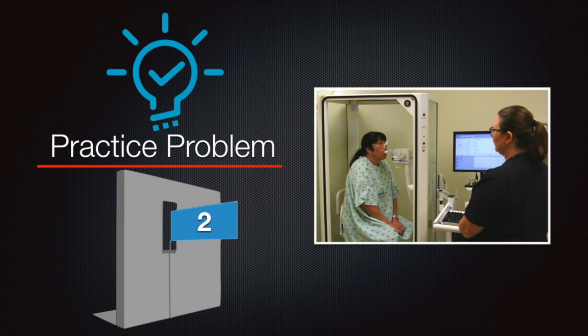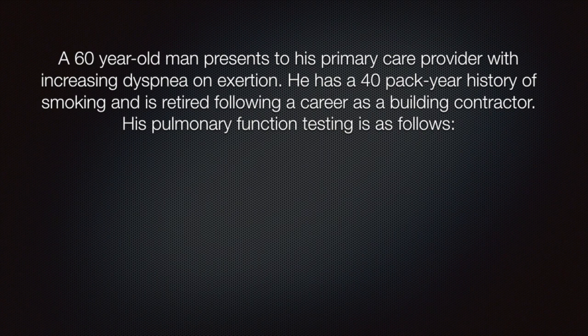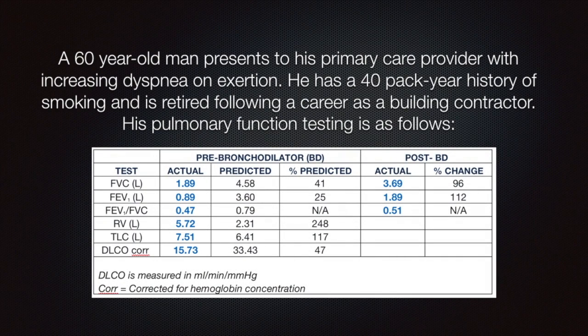Practice problem 2. He is a 60-year-old man presenting to his primary care provider with increasing dyspnea on exertion. He has 40 pack-year history of smoking and is retired following a career as a building contractor. Going back to the history, 60-year-old man, increasing dyspnea on exertion, is symptomatic. Risk factors: 40 pack-year history of smoking and career as a building contractor. Exposure to allergens or pollutants. What are we looking at?